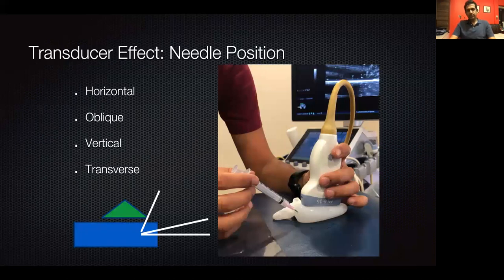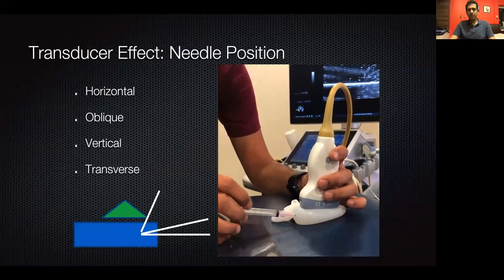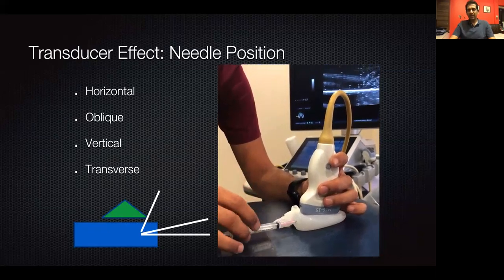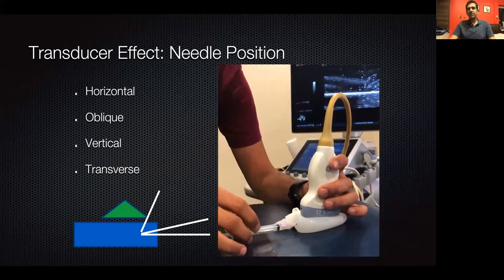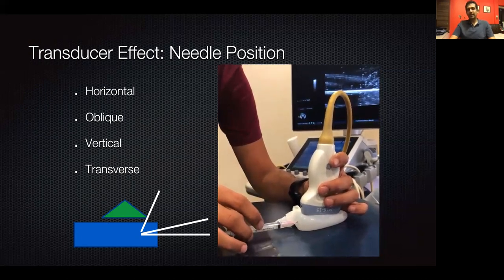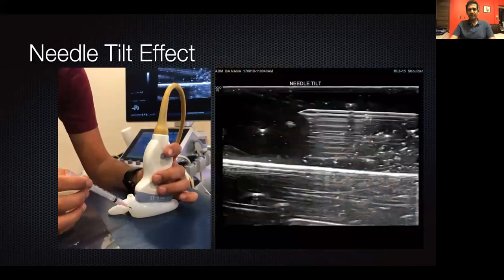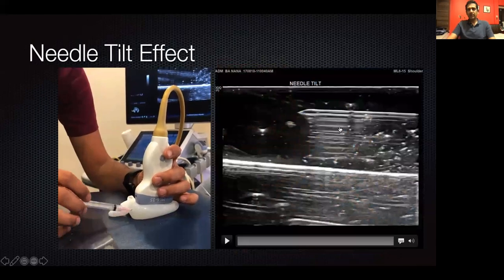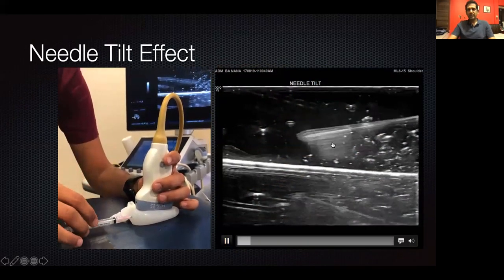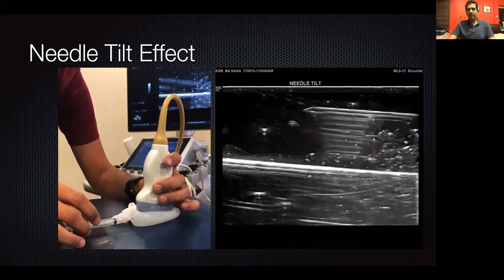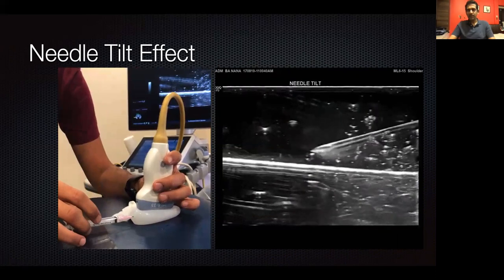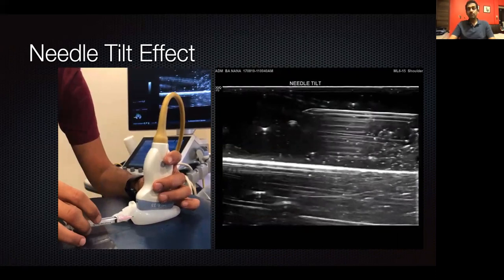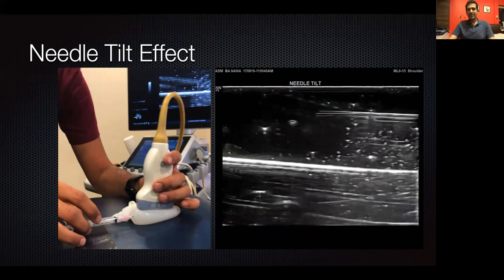This series of videos shows the effects of needle and transducer position. As you change the position of a needle — tilting it cranially or mediolaterally — it will flip in and out of the ultrasound plane in different ways, and you will see the needle differently. When the needle is parallel to the transducer, you see it most clearly; when it is oblique to the transducer, it becomes less well seen.